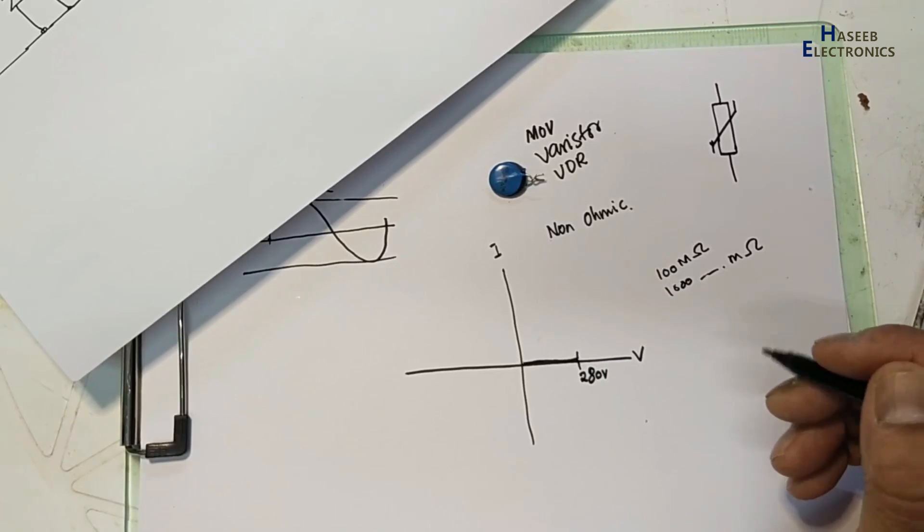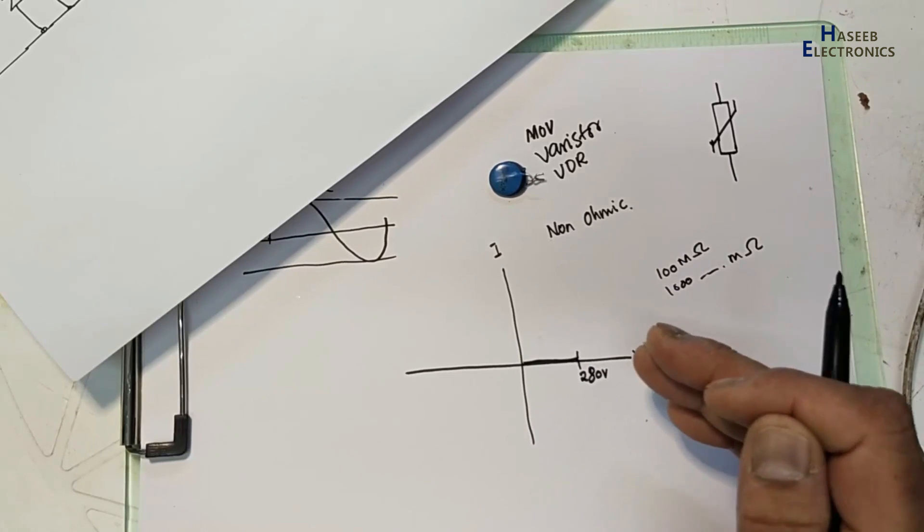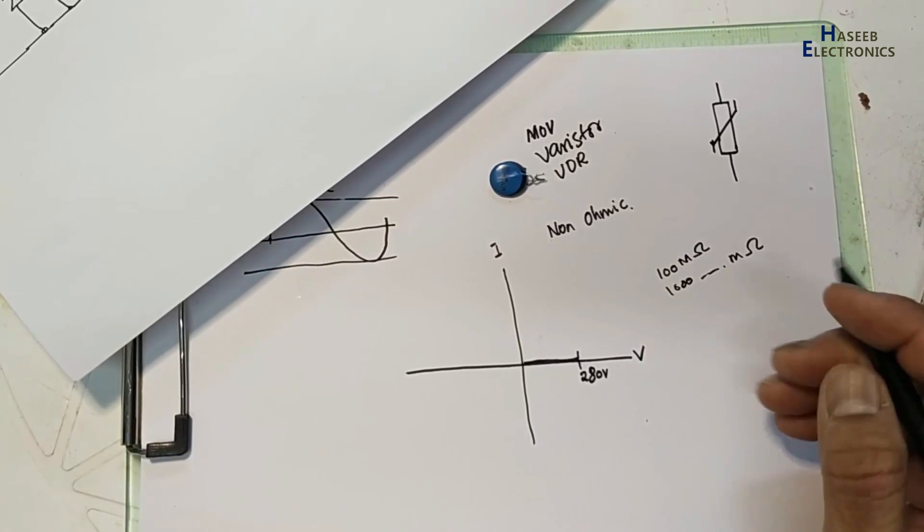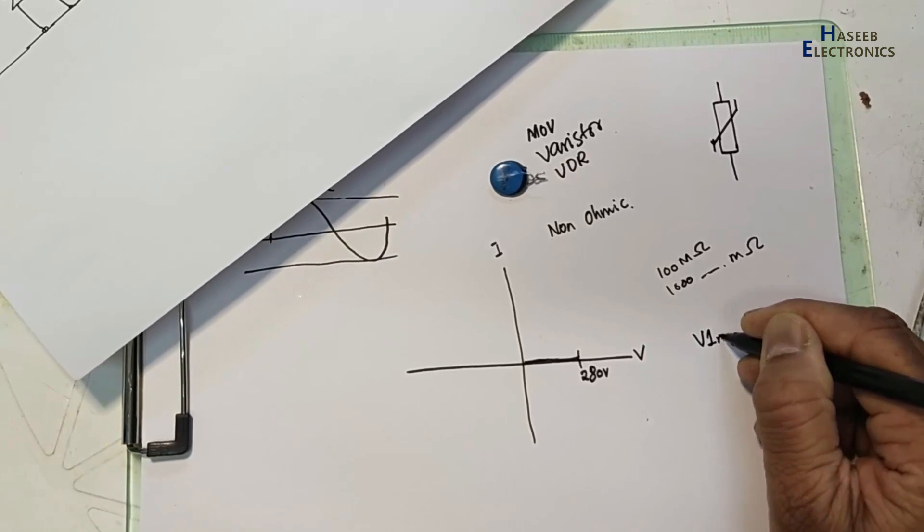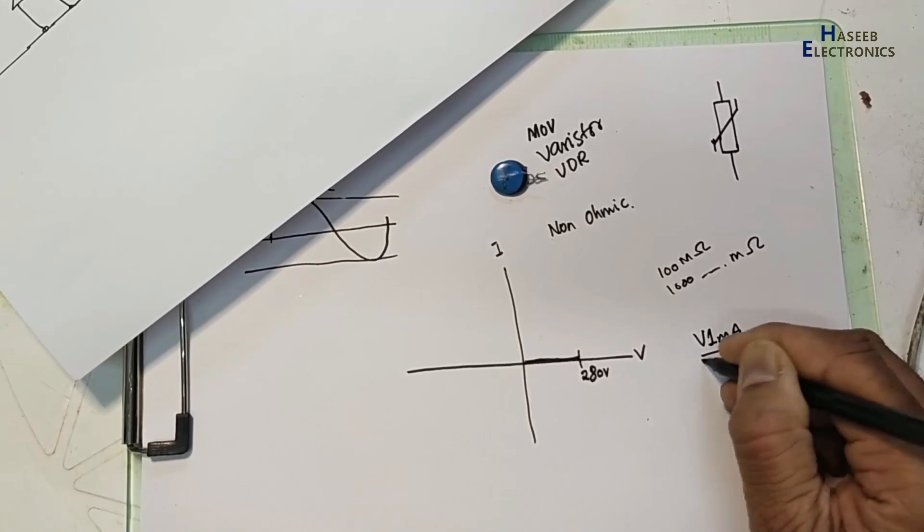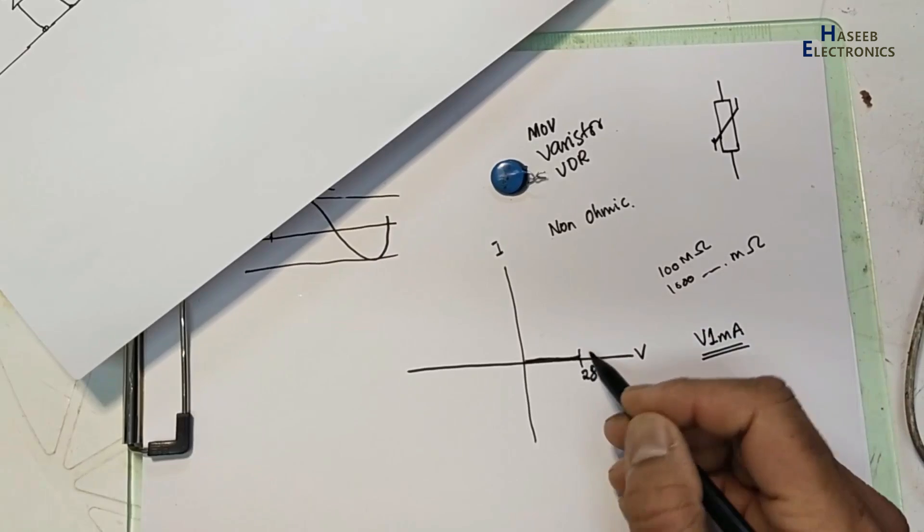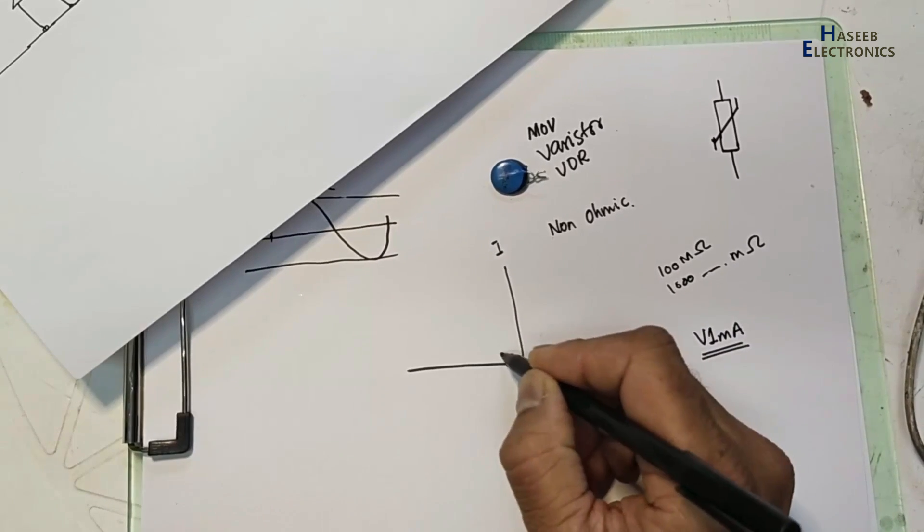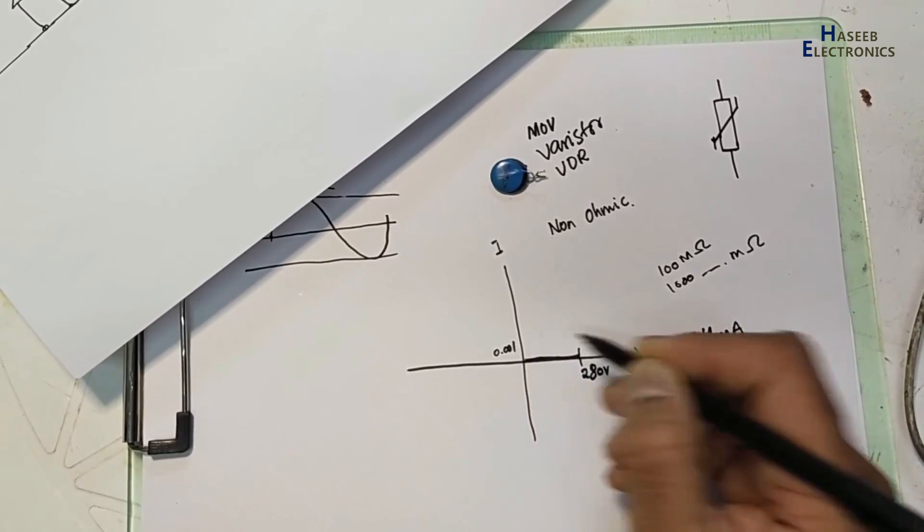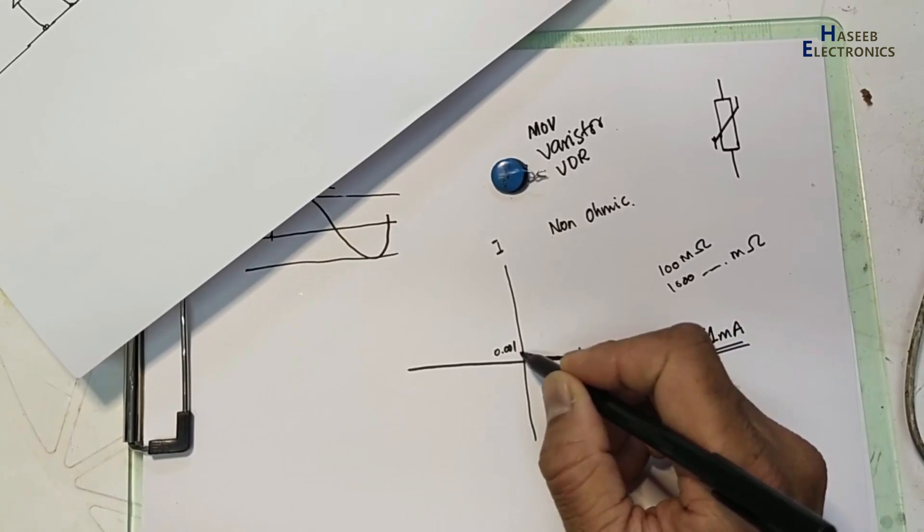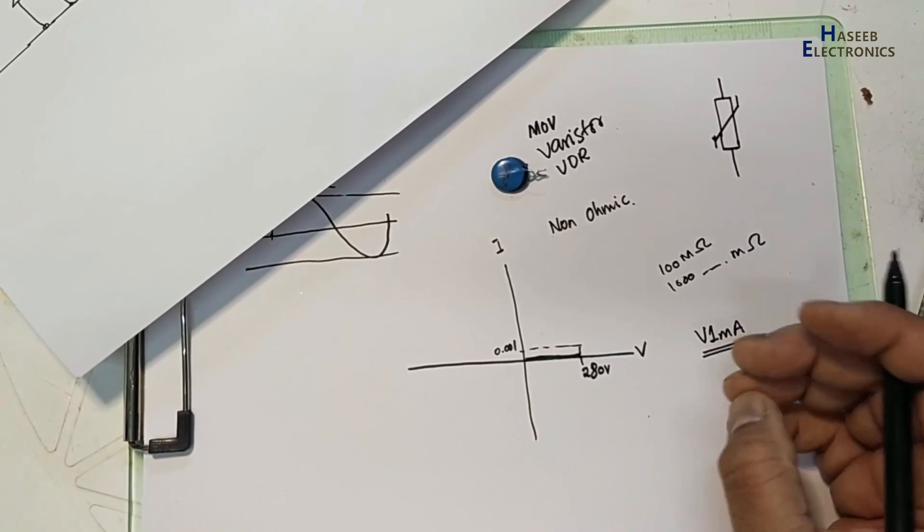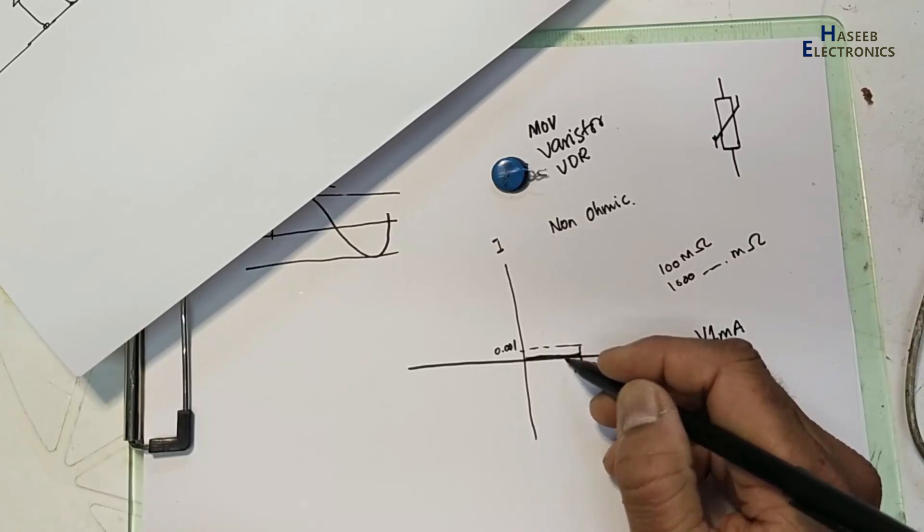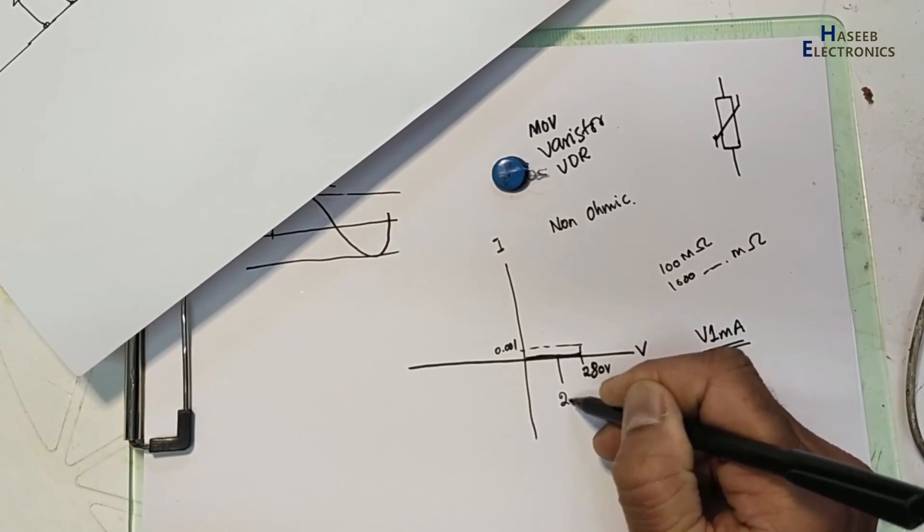That is called V1 milliampere range. This time approximately 1 milliampere, 0.001, this current will flow at this range. These are nominal voltage - working voltage 230 volt, nominal voltage.